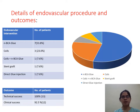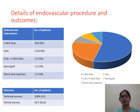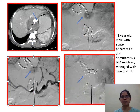Details of endovascular procedure and outcomes: N-butyl cyanoacrylate glue was used in 7 patients, coils in 3 patients, coils plus glue in 1 patient, stent graft in 1 patient, and direct glue injection in 1 patient. Technical success was achieved in all 13 patients, whereas clinical success was achieved in 12 patients.